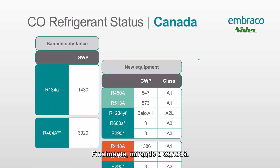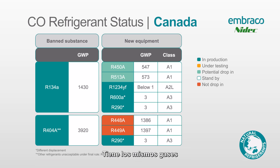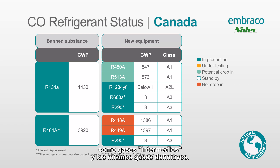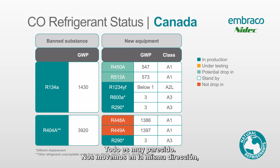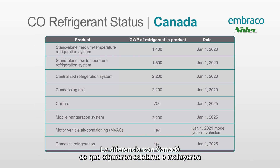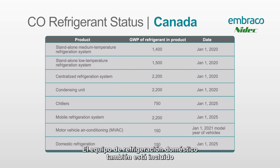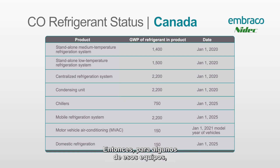Looking at Canada — Canada is very similar, with the same gases, the same interim gases, and the same final outcome gases. Everything's very similar and we're moving in the same direction, which is the lower GWP gases. The difference with Canada is they went ahead and included more equipment in their ban. You can see things like chillers and domestic refrigeration equipment are also included, and the date is a little bit further out, giving manufacturers a bit more time to figure out what gas they're going to go to.